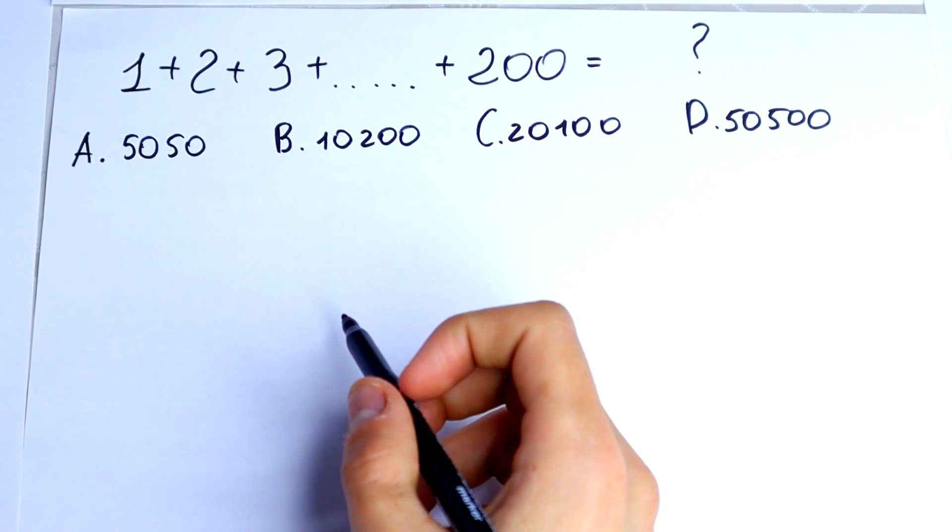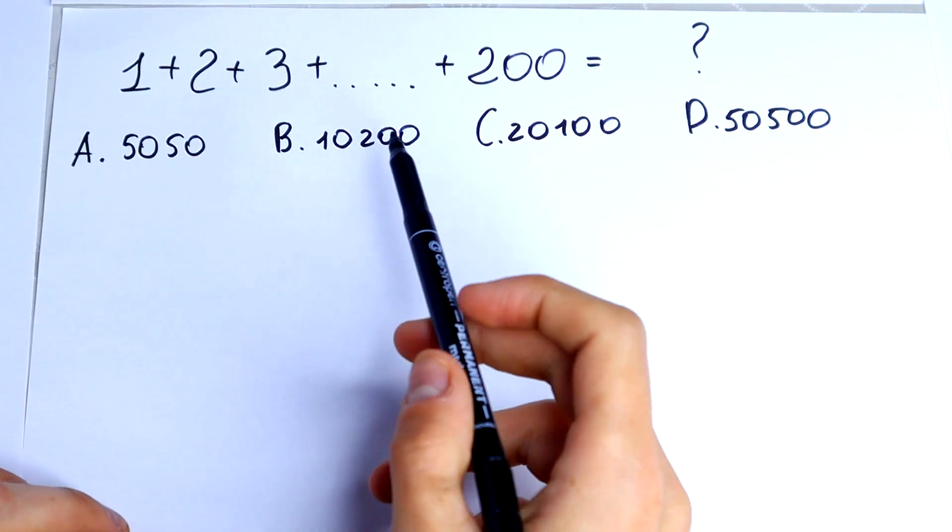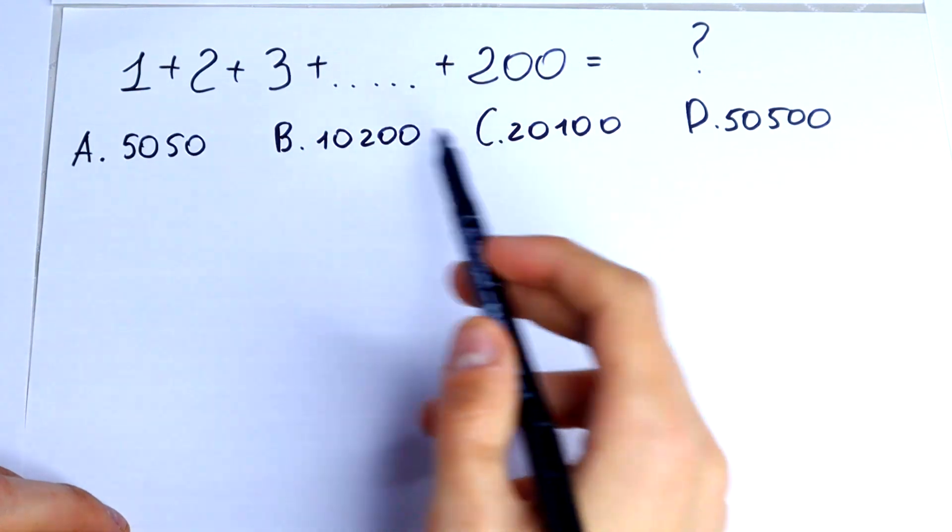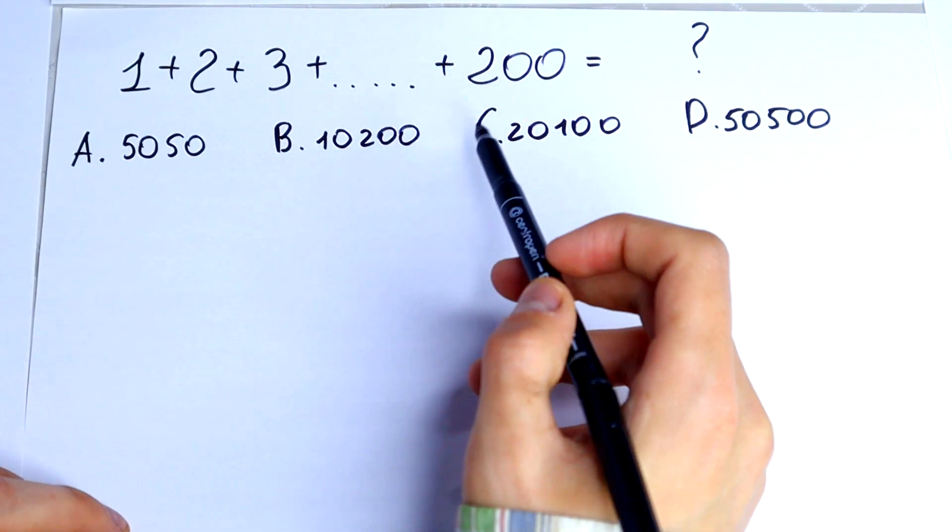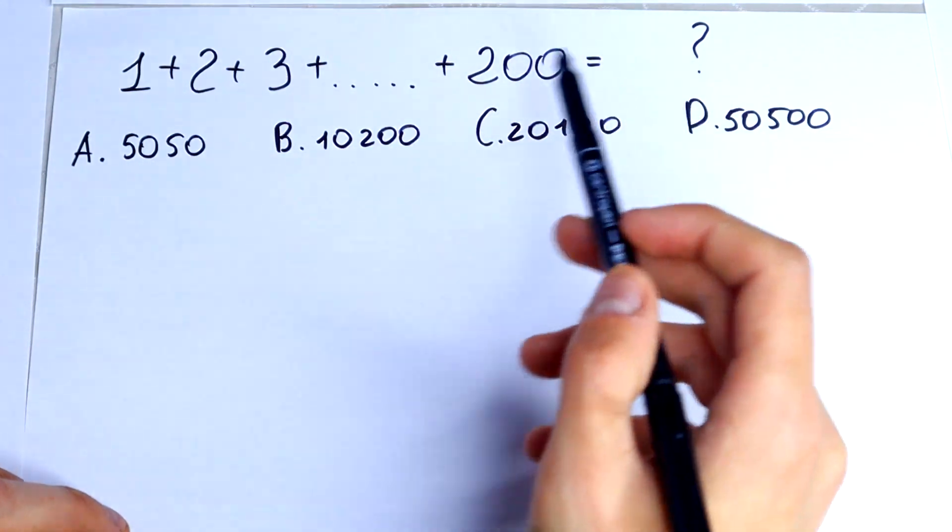Hello everyone and welcome to MathMood. Here we have an interesting algebra problem: 1 plus 2 plus 3 plus dot dot dot plus 200. And we should calculate this.